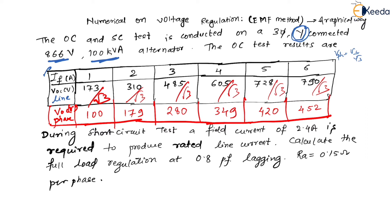In total, three things are needed: number one is the OCC (open circuit characteristics), number two is the SCC (short circuit characteristics), and number three is RA, the armature resistance. The armature resistance is given per phase, so that is fine.